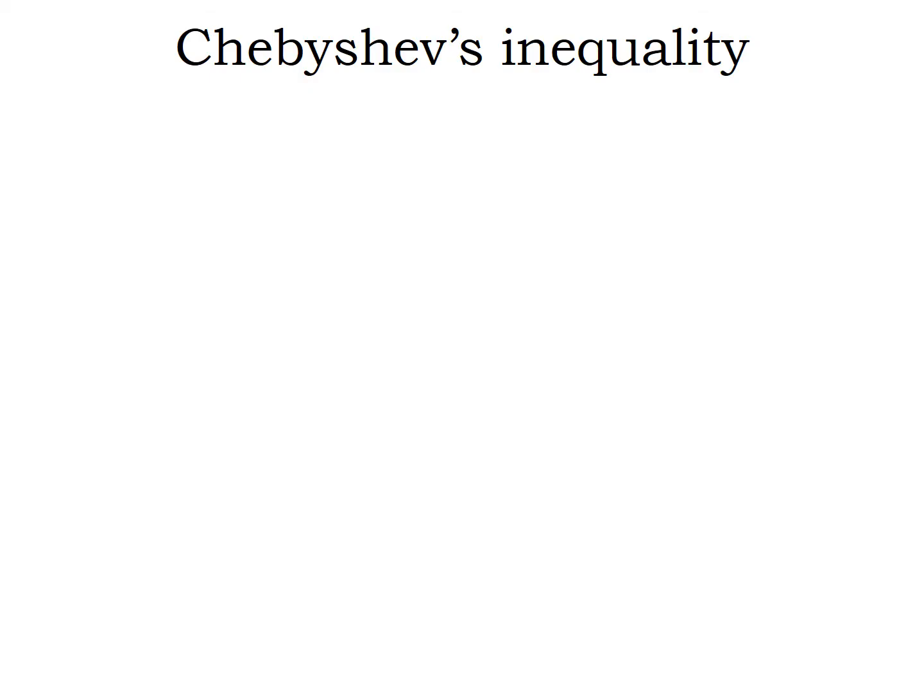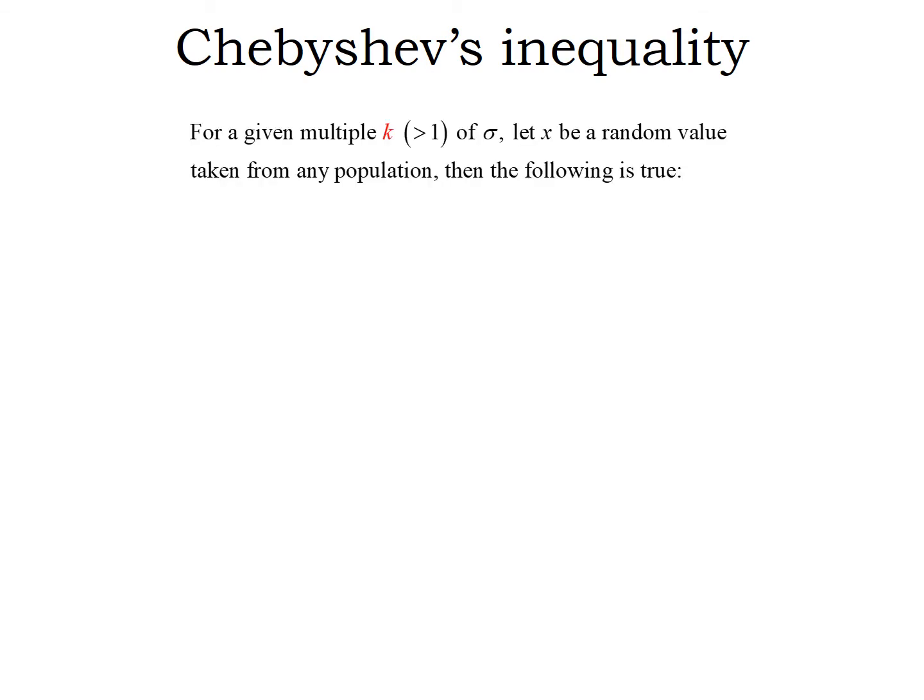Here's Chebyshev's inequality. For a given multiple K of sigma — that's K standard deviations — we're going to have X be a random value taken from any population. That population could be continuous, discrete, symmetric, bimodal, skewed left, skewed right, uniform — it does not matter. Chebyshev's inequality always applies in any situation.